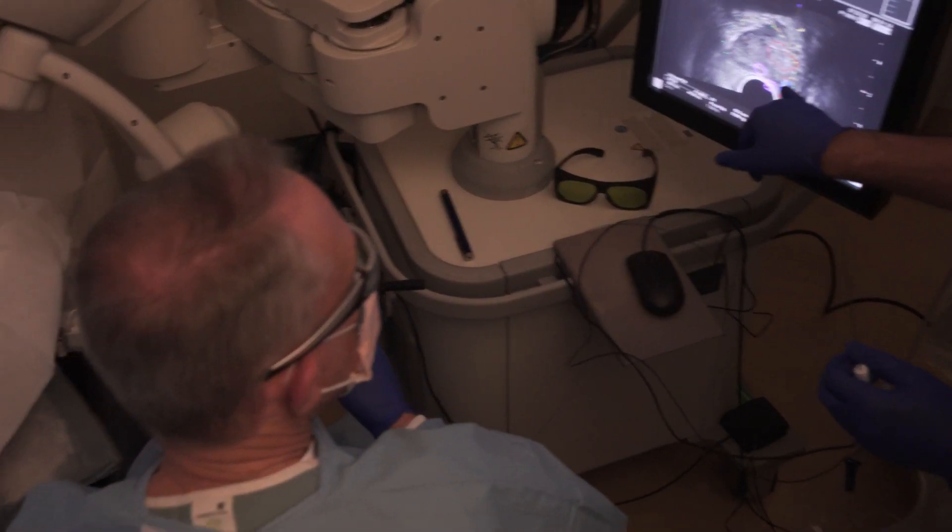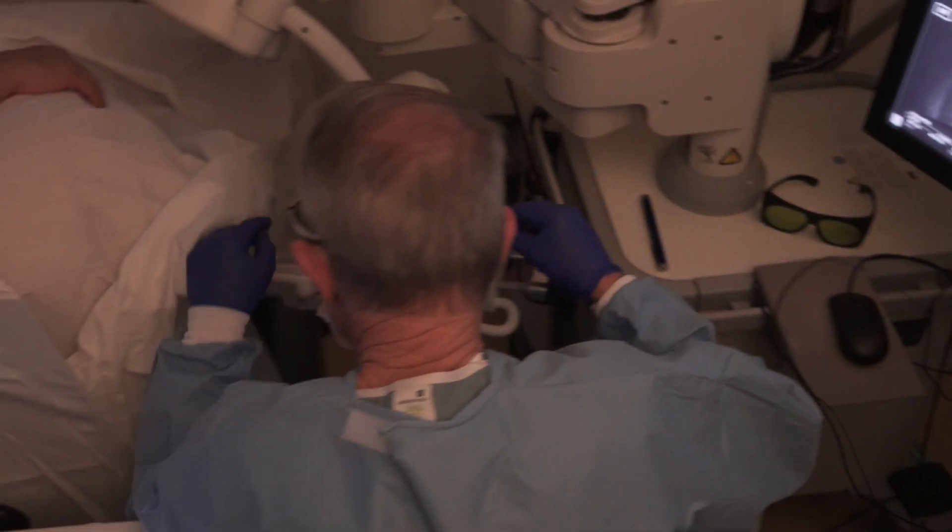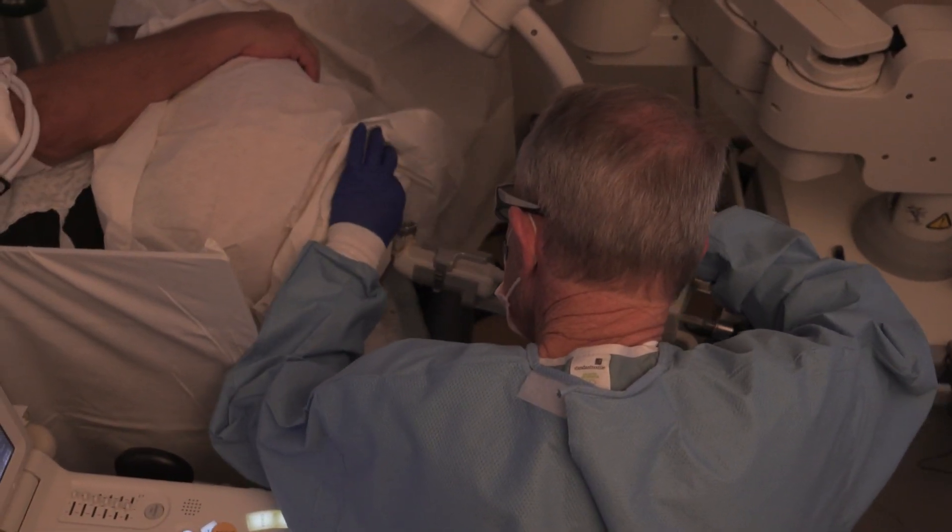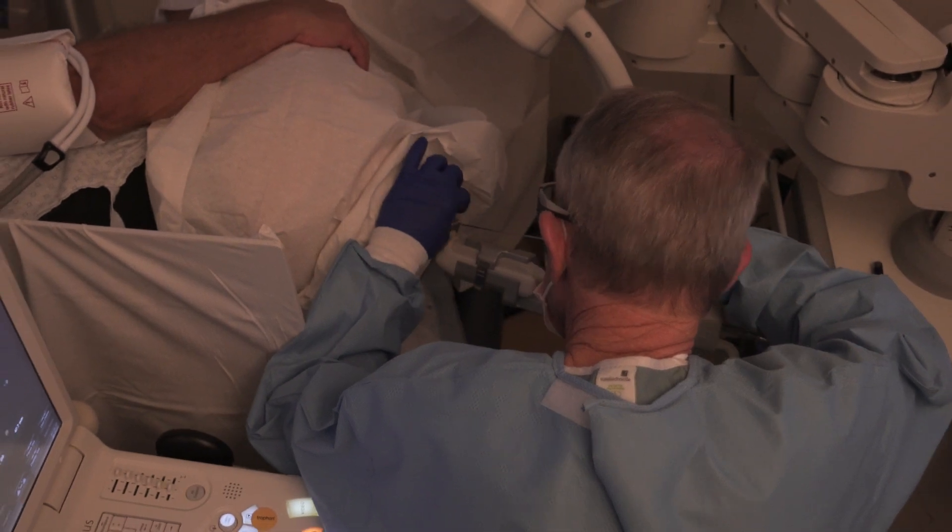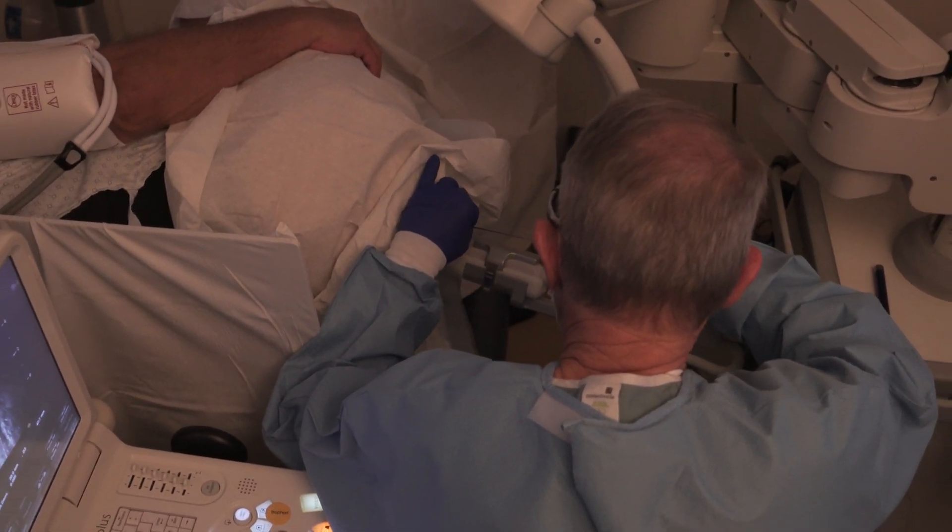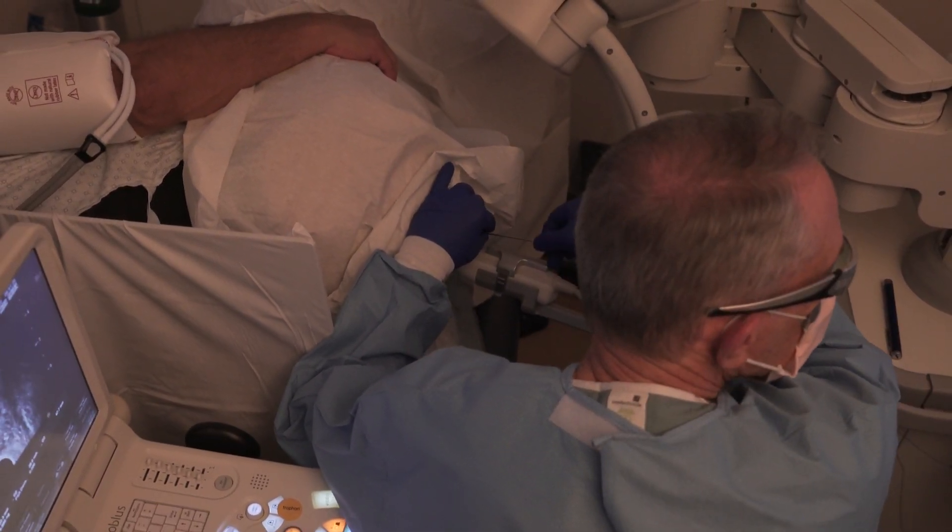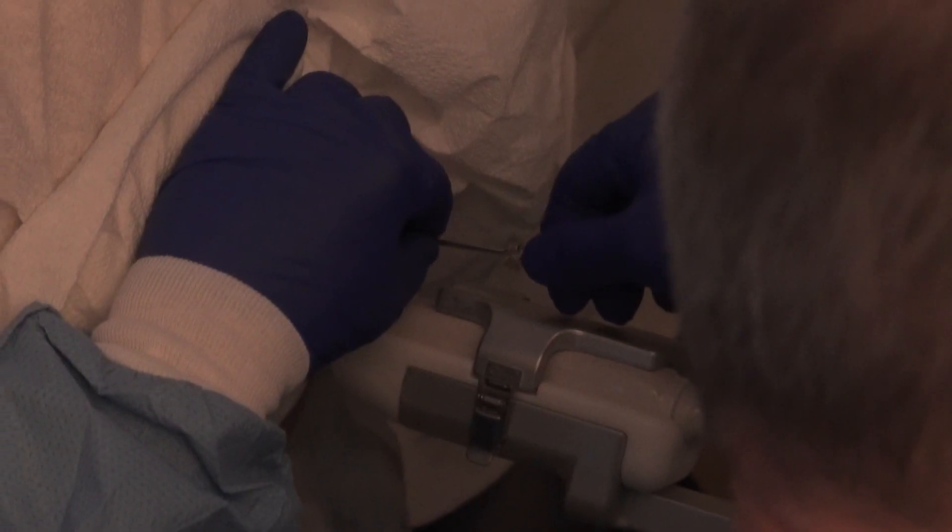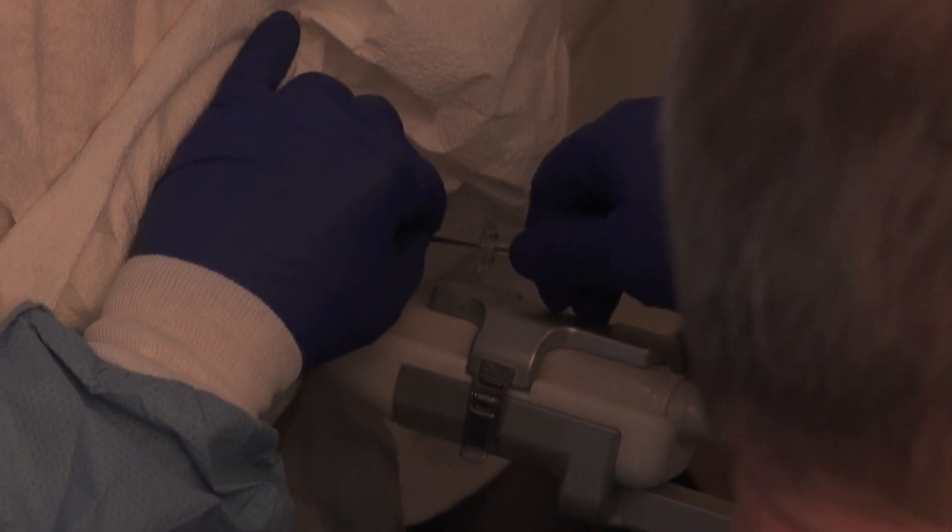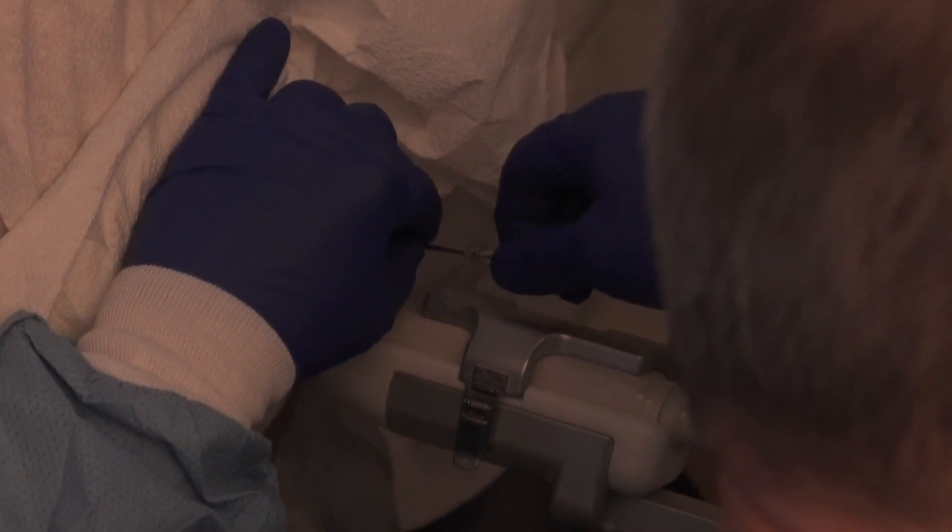Once at the desired ablation site, the 14-gauge laser catheter is inserted into the center channel of the guide. Note that the guide is curved to provide gentle friction and prevent treatment elements from slipping backward during ablation.